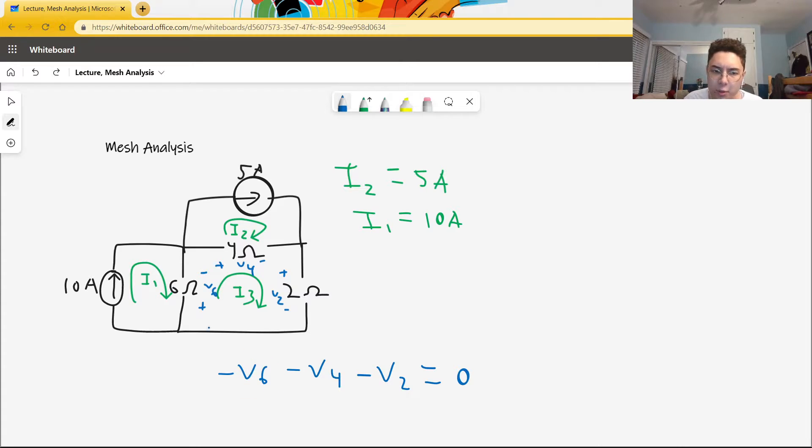Because I3 passes from the positive to the negative terminal, the contribution of I3 to V6 is simply I3 times 6 ohms. That is a positive contribution. I1, however, goes in the opposite direction. I1 goes from the negative to the positive terminal on the 6 ohm resistor. So we are going to describe its effect on the voltage drop across the resistor as a negative effect.